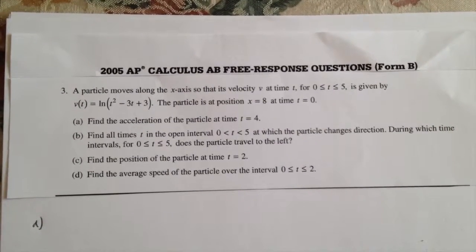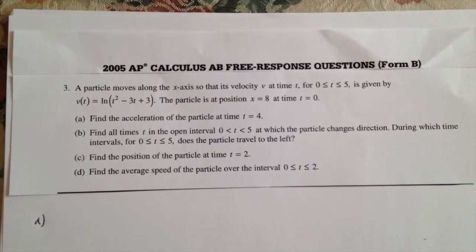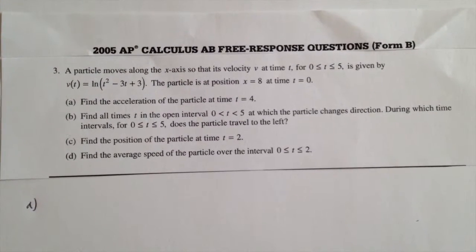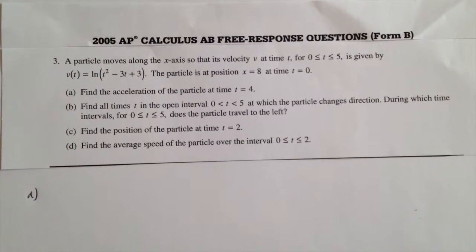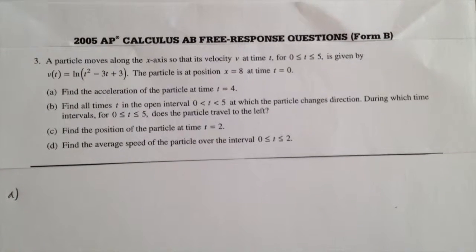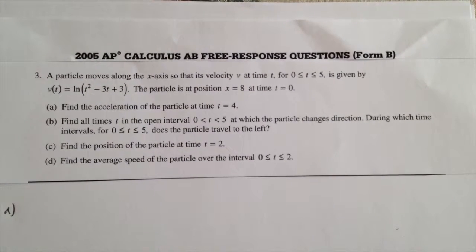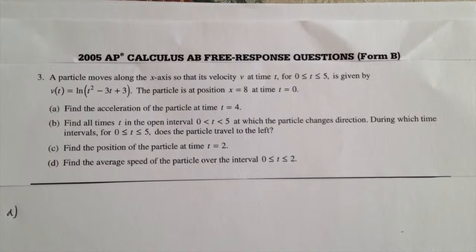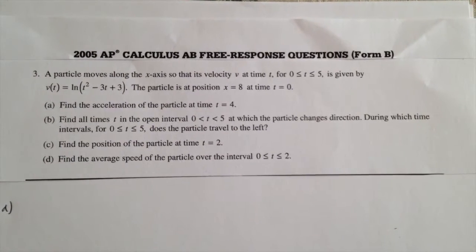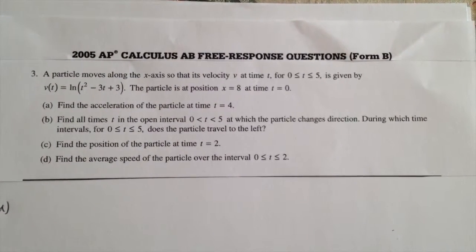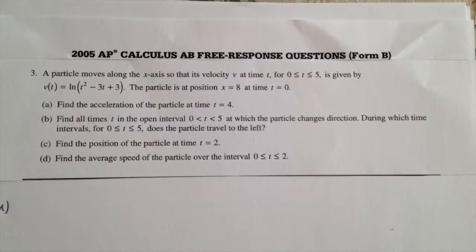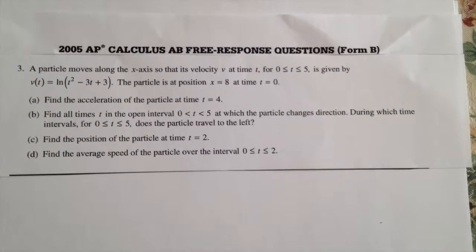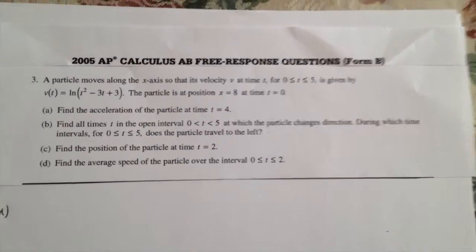Hello, so today we're going to be talking about the 2005 AP Calculus Free Response Questions, Form B. Question 3 states: a particle moves along the x-axis so that its velocity v at a time t, for t greater than 0 and less than 5, is given by the equation v of t equals ln times t squared minus 3t plus 3. The particle is at position x equals 8 at time t equals 0.